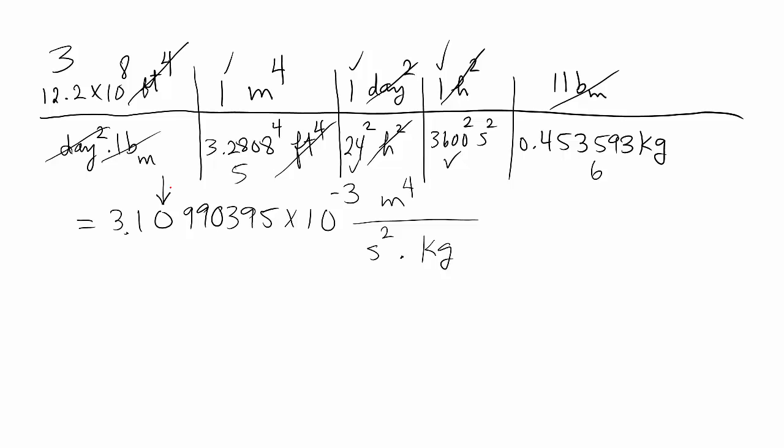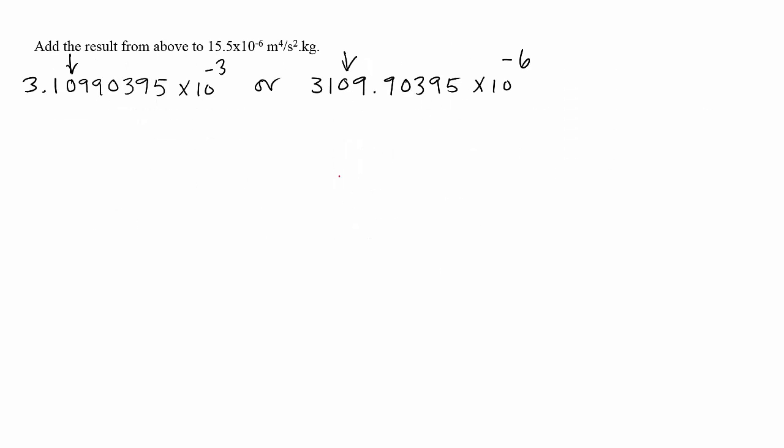I would like to add this number to 15.5×10^-6. Because this is minus 3, I am gonna write it with the same power of 10. So I will write the answer as 3109.90395×10^-6. I am ready to add that second number.